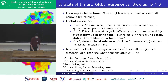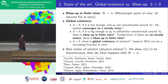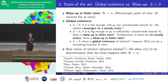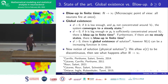Regarding the state of the art, I will focus only on global existence versus blow-up, and only for positive B. What we understand by blow-up is that the firing rate diverges — there is some finite time at which the firing rate becomes infinite. After that time, there is no classical solution. From the microscopic point of view, what happens is that all the neurons spike at the same time.